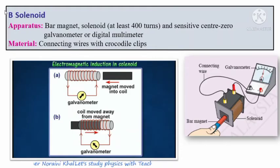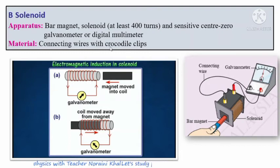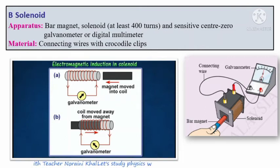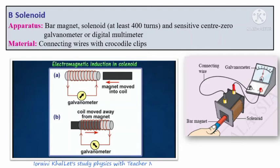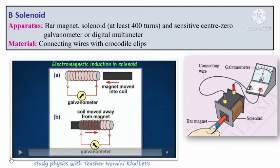Let's look at the solenoid. In this experiment, we need a solenoid with at least 400 turns, a sensitive center-zero galvanometer or digital multimeter, and connecting wires with crocodile clips. This is the setup: the solenoid is connected to the galvanometer and this is the bar magnet. We move the bar magnet towards and away from the solenoid and observe what happens to the galvanometer reading. Watch this video.